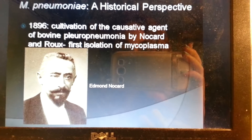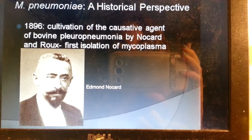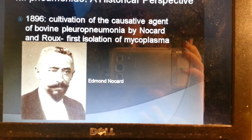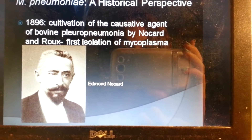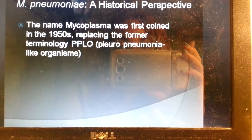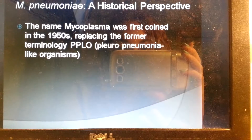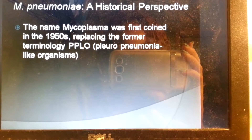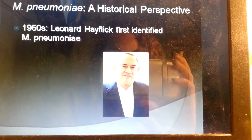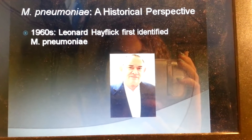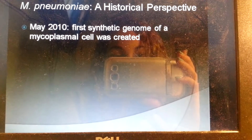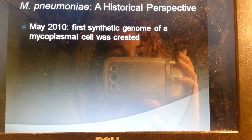A historical perspective on Mycoplasma pneumoniae: In 1896, cultivation of the causative agent of bovine pleuropneumonia by Nocard and Roux marked the first isolation of mycoplasma. The name mycoplasma was first coined in the 1950s, replacing the former terminology pleuropneumonia-like organisms. In the 1960s, Leonard Hayflick first identified Mycoplasma pneumoniae. In May of 2010, the first synthetic genome of a mycoplasma cell was created.